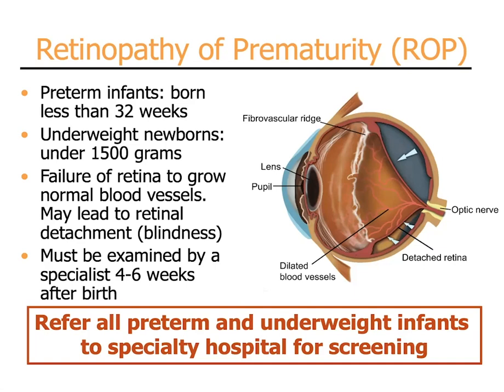Retinopathy of prematurity is when the retina fails to grow normal blood vessels. It leads to abnormal neovascularization growth, similar to what diabetics experience. These neovascular vessels also have scar tissue with them, and it leads to contraction or detachment of the retina. Because the retina is what makes the picture in the eye, this leads to blindness, which is usually not treatable.